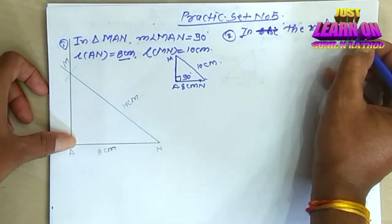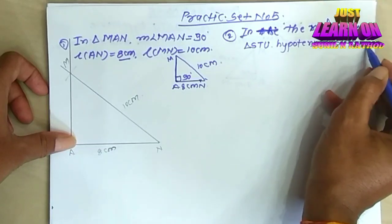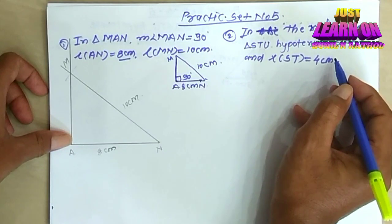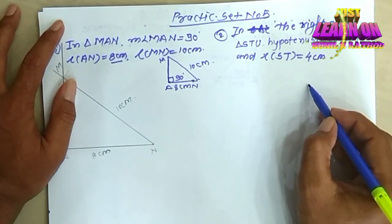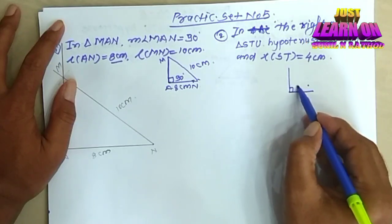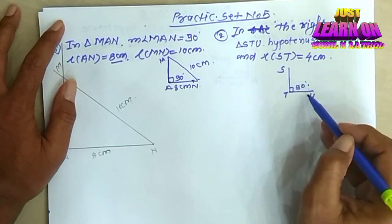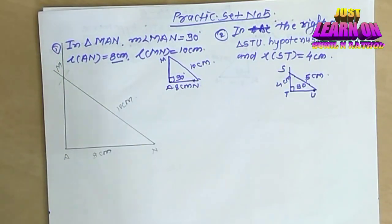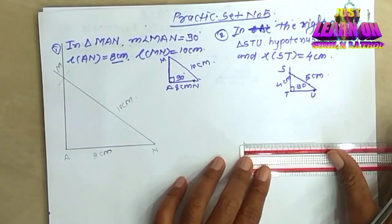Here is practice set number 5. In triangle MAN, the measurement of angle MAN equals 90 degrees. Here is a rough diagram of this triangle. It's very simple.